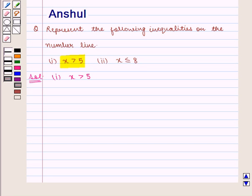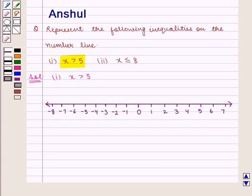For this, first draw a number line in which positive integers are marked to the right of 0 and negative integers are marked to the left of 0.